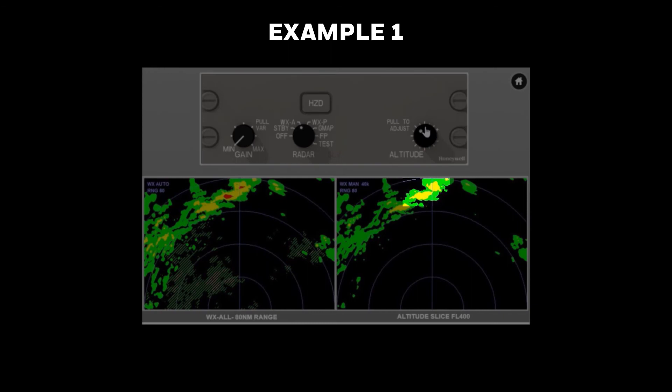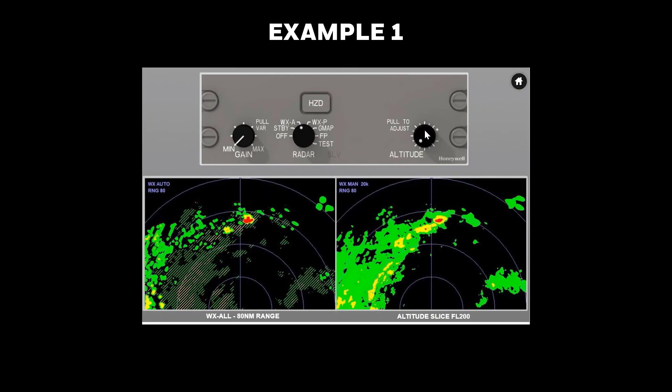An altitude slice at flight level 400 shows both cells to be carrying yellow reflectivity aloft.